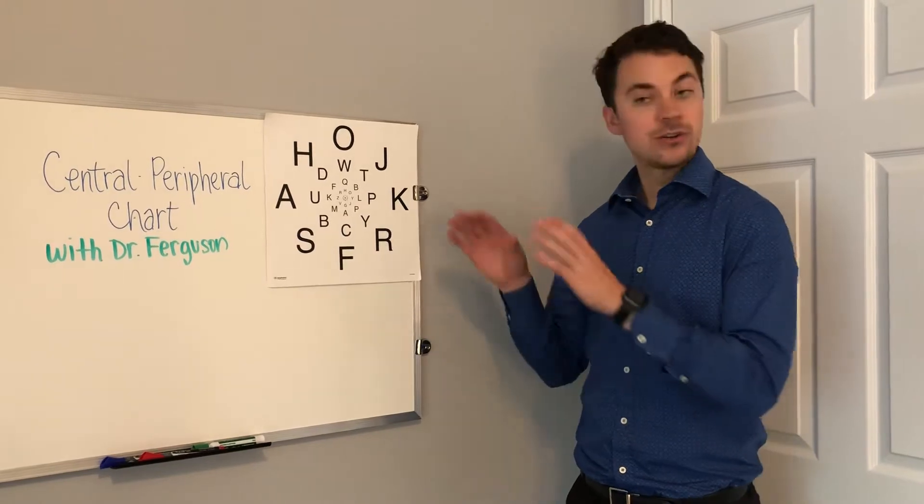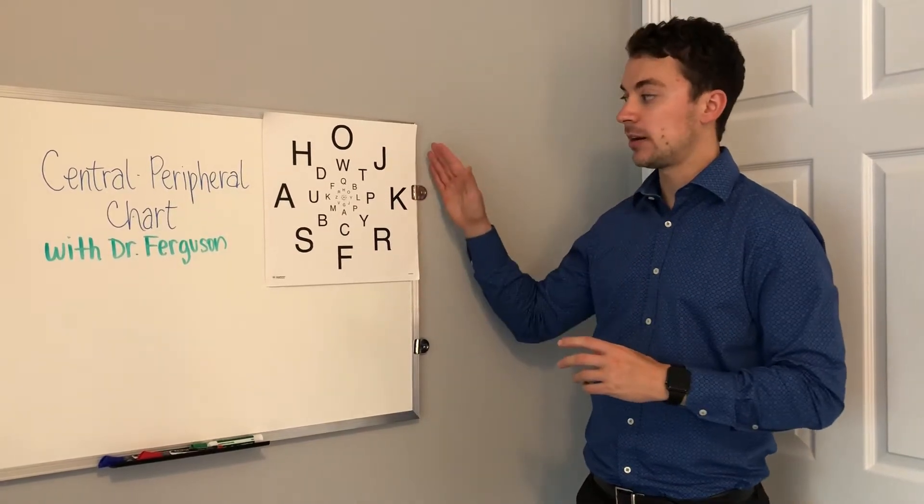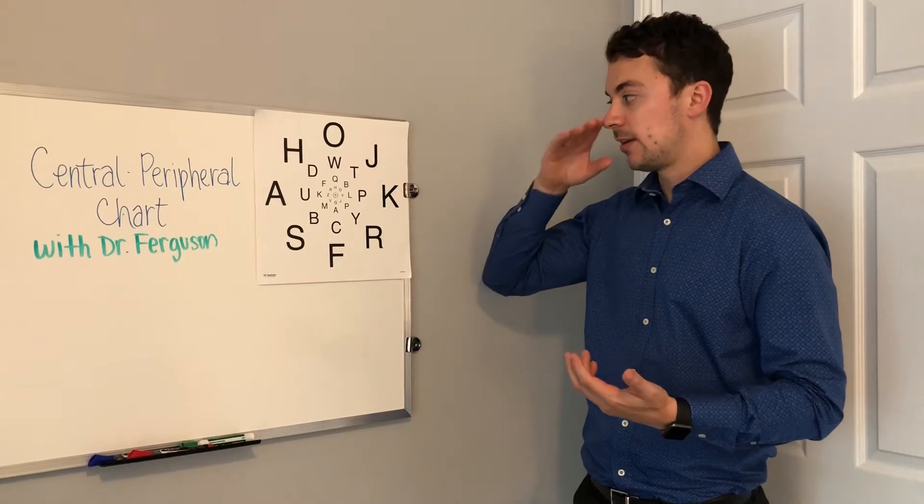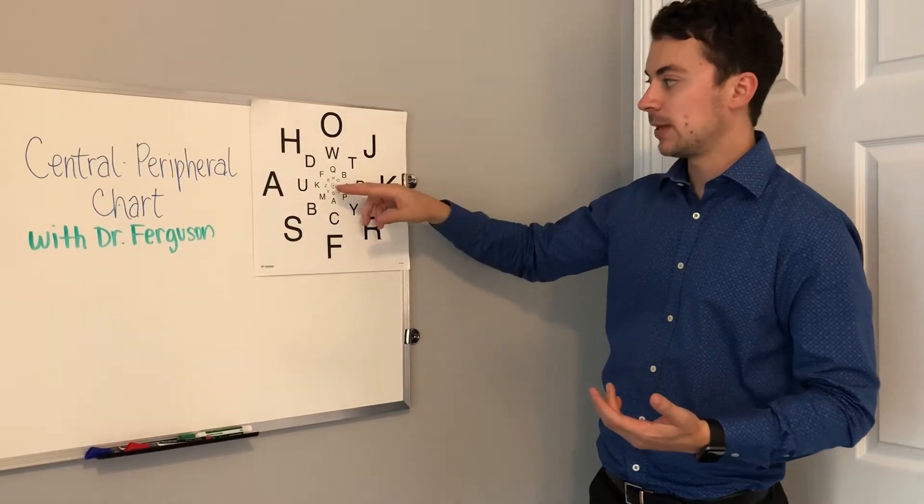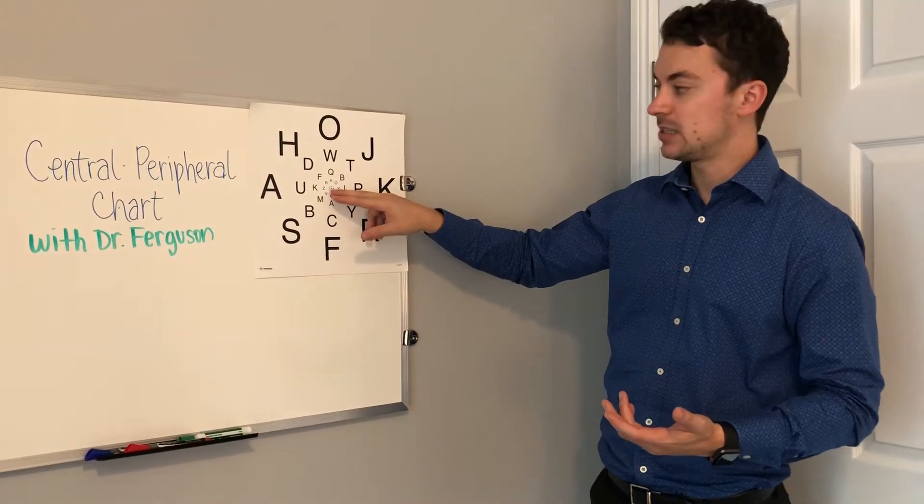So what you're going to do with this chart is you're going to tape it to the wall so it's at about eye level, and your eye level should be almost right where the middle dot is there.